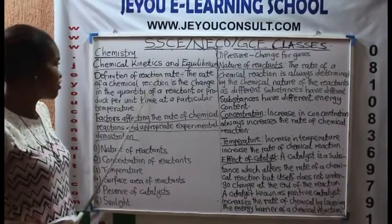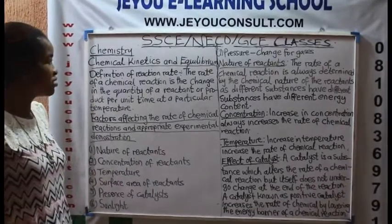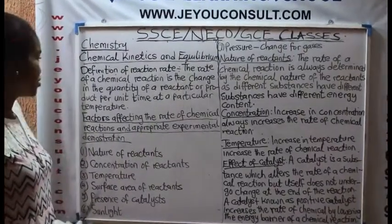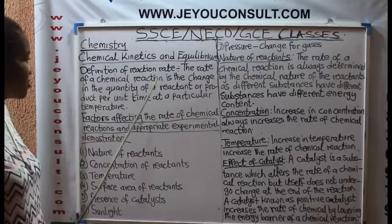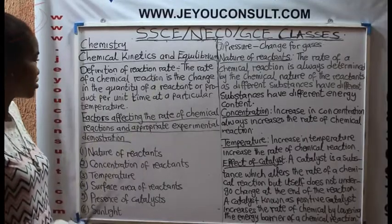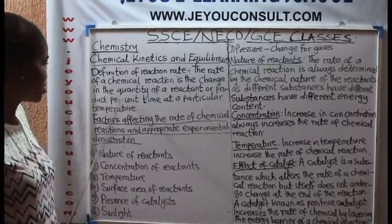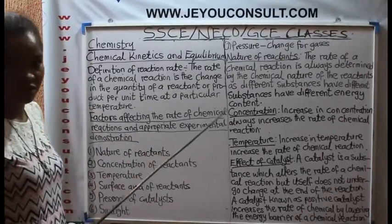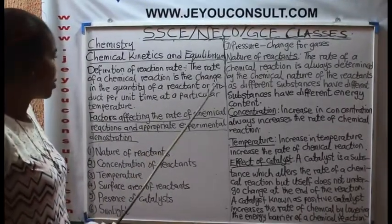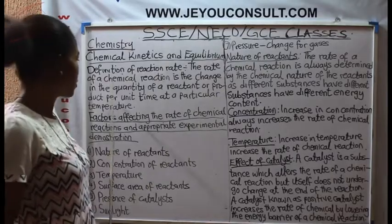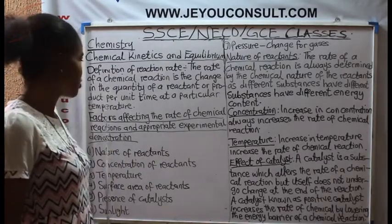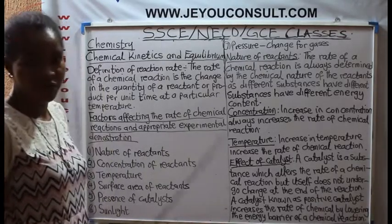Definition of reaction rate. The rate of a chemical reaction is the change in the quantity of a reactant or product per unit time at a particular temperature.